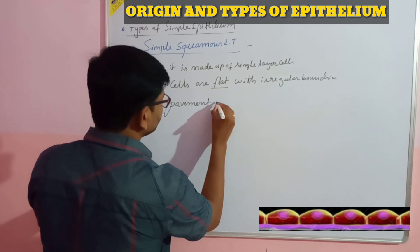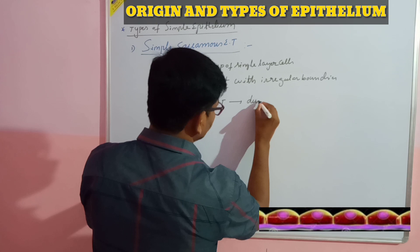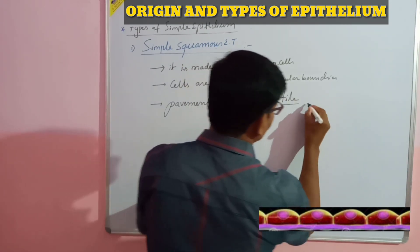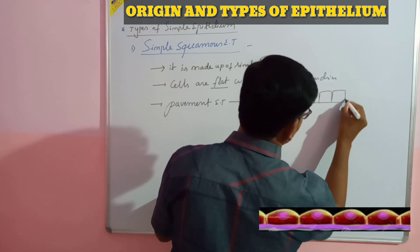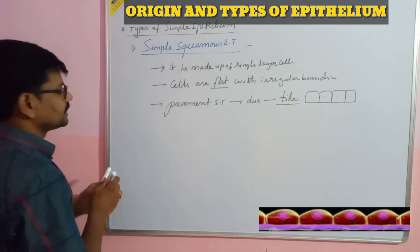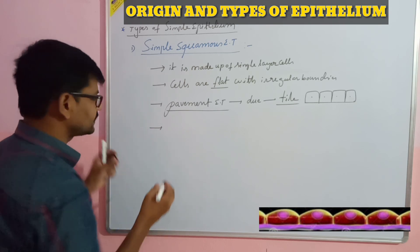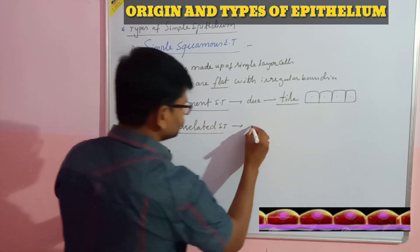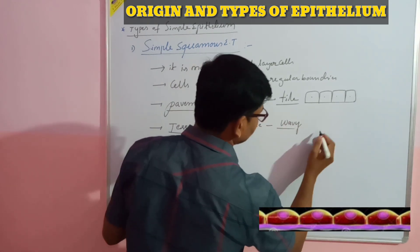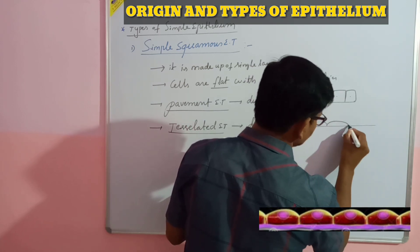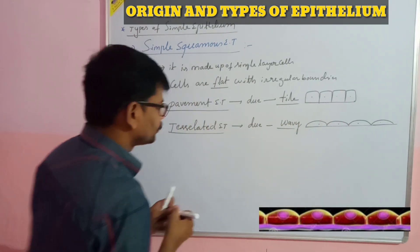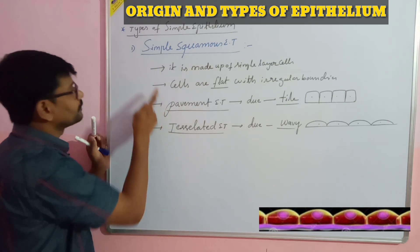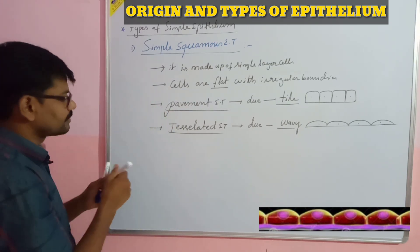Simple squamous epithelium is also known as pavement epithelium, because the cells appear like tiles. If the cell appears like a tile-like structure, this type of epithelial tissue is called pavement epithelium. It is also known as tessellated epithelium due to the wavy appearance of the cells. If the cell shows a wavy-like appearance, that type of simple squamous epithelium is called tessellated. If it shows tile-like appearance, it is called pavement epithelium.